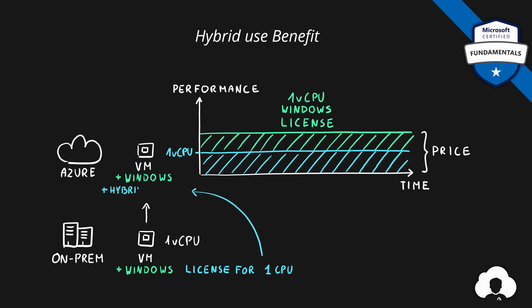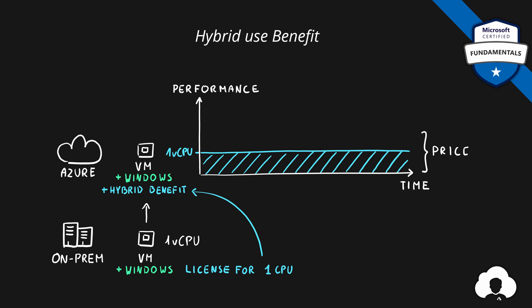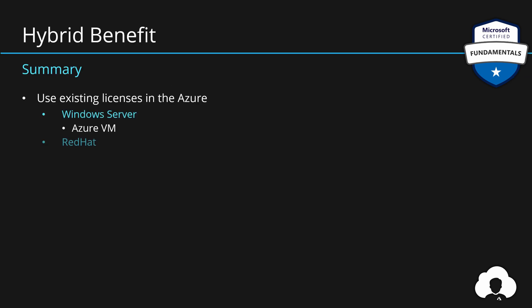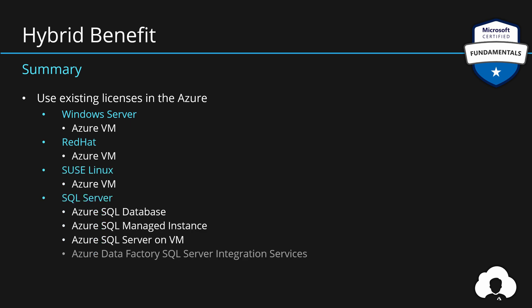When you select hybrid benefit, it removes the cost of the license associated with the virtual machine, so the cost is only associated with compute power. If you combine hybrid use benefit with Azure reservations, you can significantly reduce the cost of your Azure environment. Hybrid benefits allow you to use existing licenses you already purchased for Windows Server, Red Hat, SUSE, or SQL Server in Azure.